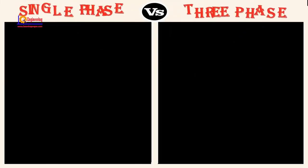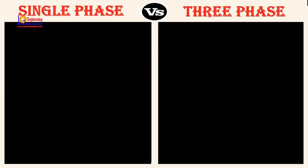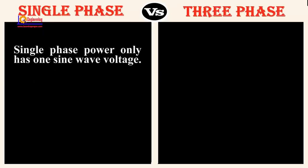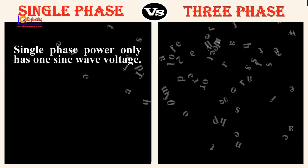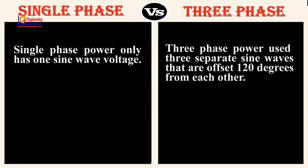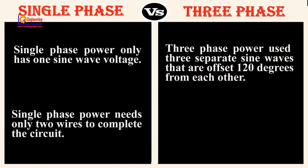Now let's see the difference between single-phase power and three-phase power. Single-phase power only has one sine wave voltage. Three-phase power uses three separate sine waves that are offset 120 degrees from each other. Single-phase power needs only two wires to complete the circuit.